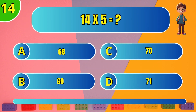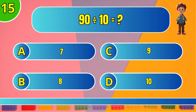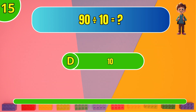What is 14 times 5? C: 70. What is 90 divided by 10? D: 10.